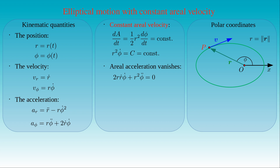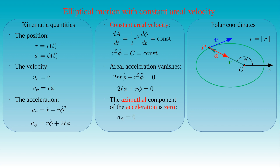Since the radial coordinate R is not equal to zero, we can divide this equation by R. Then two times R-dot times phi-dot plus R times phi double-dot is equal to zero. But we recognize that this expression is equal to the azimuthal component of the acceleration, that is A_phi is zero. Therefore, the acceleration of the traveling body points in the opposite direction of its position vector, if its aerial velocity is constant along the orbit.